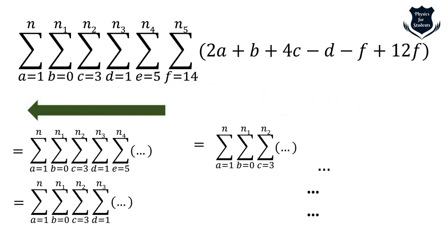So there are two simple steps: first, take the rightmost innermost sigma and evaluate it; then move left, keeping all the outer sigma variables constant while you operate on the current one — keeping e, d, c, b, a constant in turn. These are the steps to keep in mind.